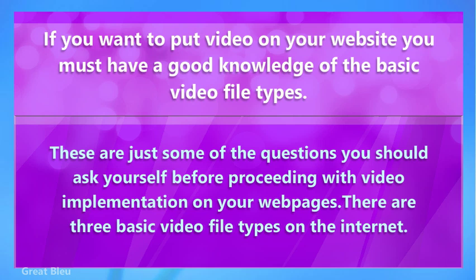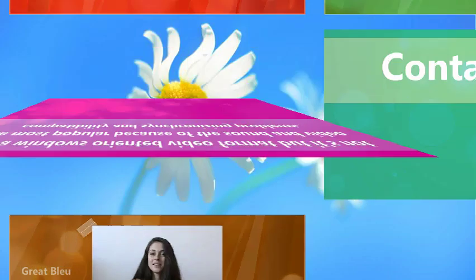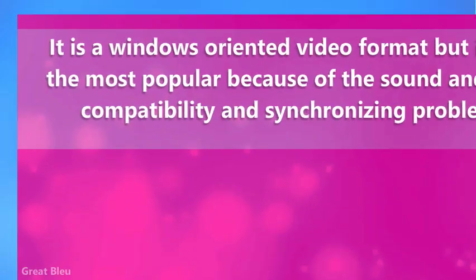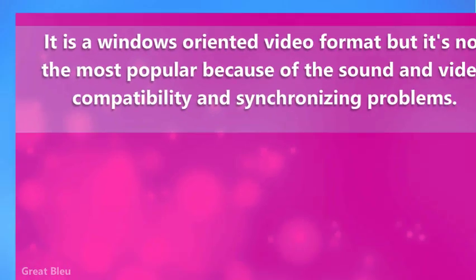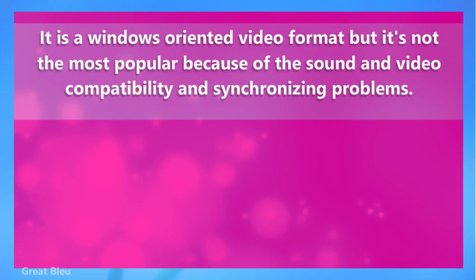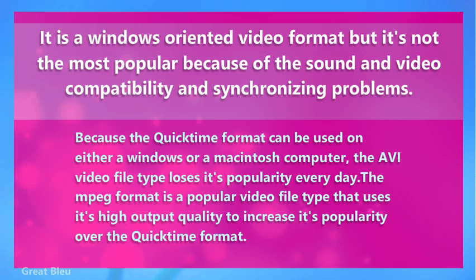There are three basic video file types on the internet. AVI is a Windows-oriented video format, but it's not the most popular because of sound and video compatibility and synchronizing problems. Because the QuickTime format can be used on either a Windows or a Macintosh computer, the AVI video file type loses its popularity every day.